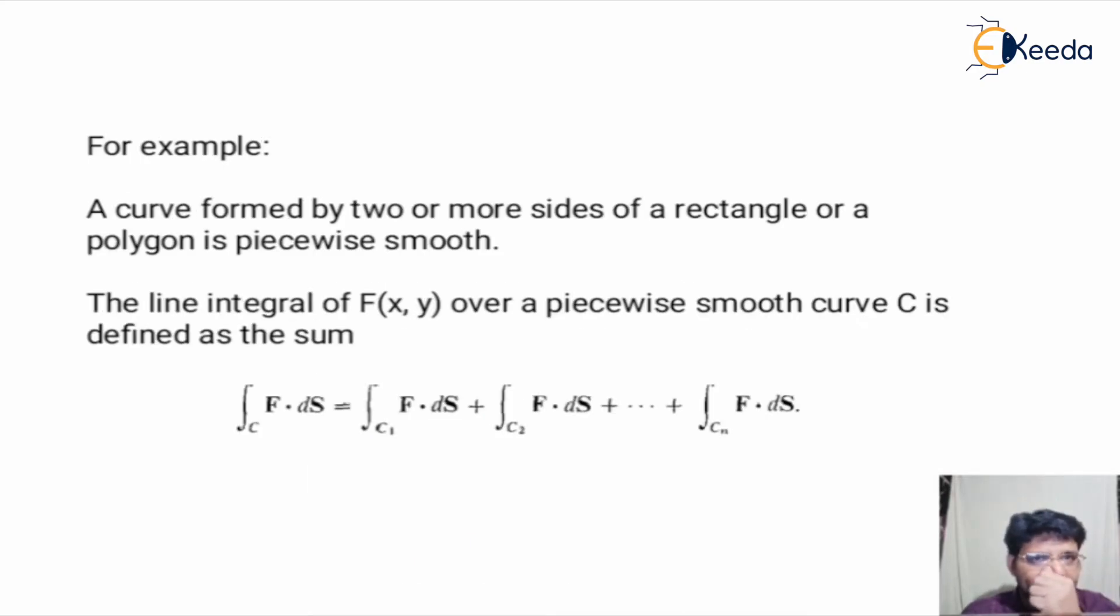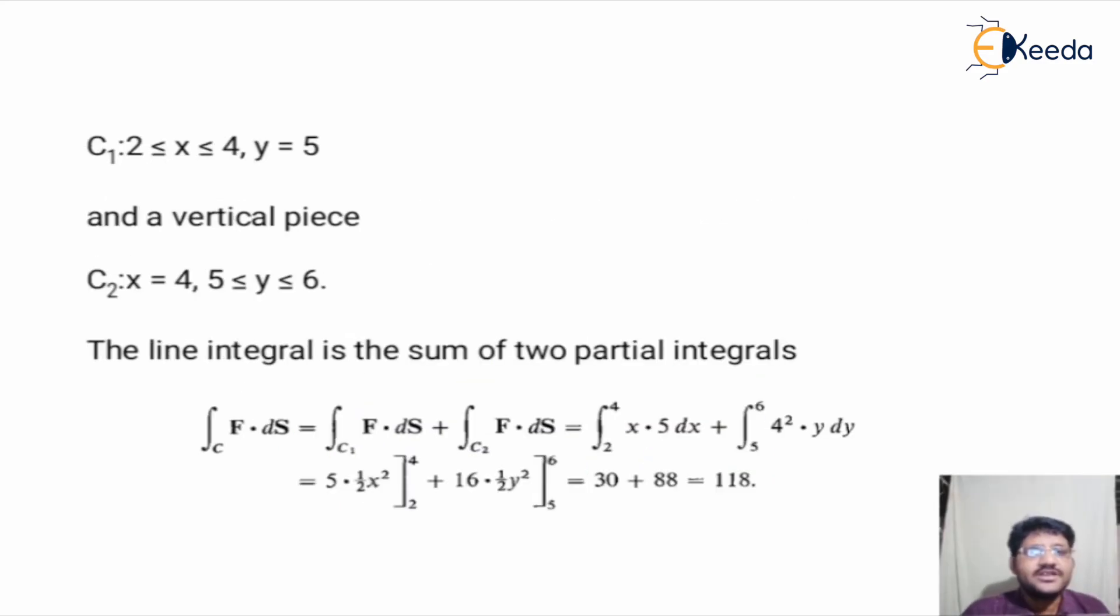Now, take another example. A curve formed by two or more sides of a rectangle or a polygon is piecewise smooth. The line integral of function f(x, y) over a piecewise smooth curve C can be defined as the summation of pieces C1, C2, C3 up to Cn.